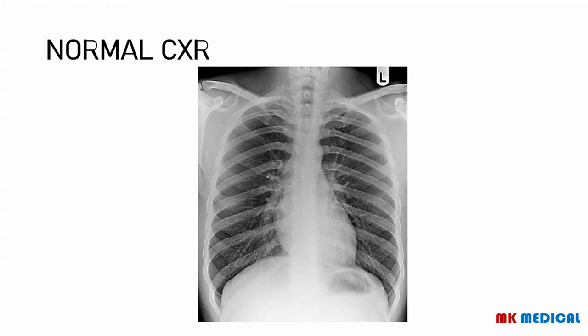We then go on to the ABC approach, looking at the airway and each of the bones on the X-ray. We looked at some pathologies present on bones, like fractures, scoliosis, kyphosis, rib sclerosis, osteolytic lesions, as well as other bone pathologies such as rib notching.